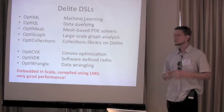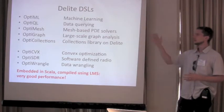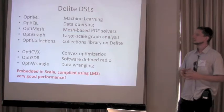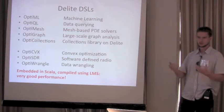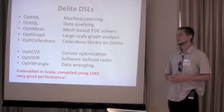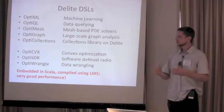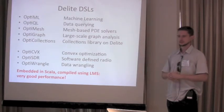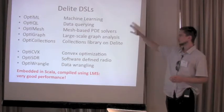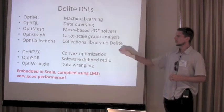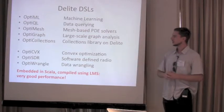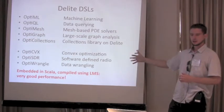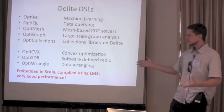We built several DSLs on top of our infrastructure for different domains. OptiML, the first DSL, is about machine learning and is similar to MATLAB or R. OptiQL is about data querying, similar to SQL but as an embedded DSL. OptiMesh is about mesh-based PDE solvers — essentially a re-implementation of Liszt using the Delight framework. OptiGraph is about graphs. There are also newer ones: OptiCPX for convex optimization, software-defined radio OptiSDR, and OptiWrangler for generic data ranking and transformation. All are embedded in Scala and compiled at runtime using our LMS framework, with very good performance results.